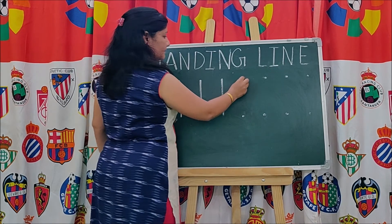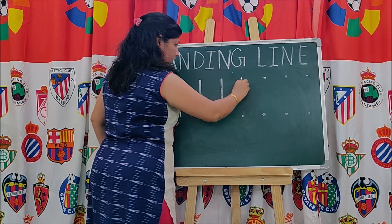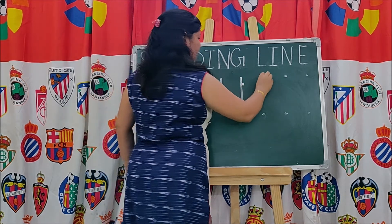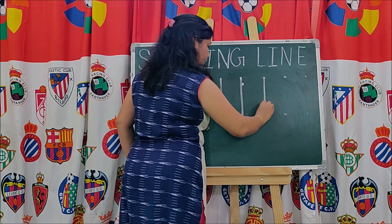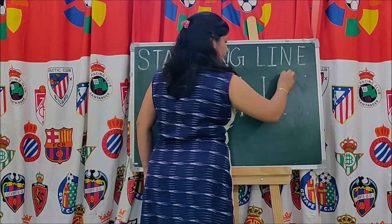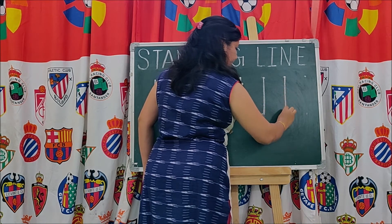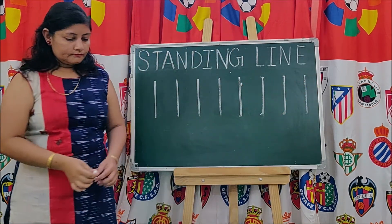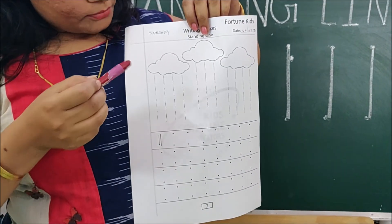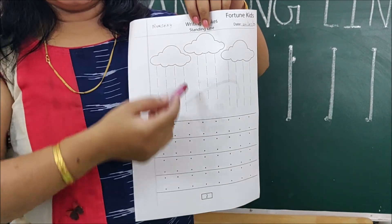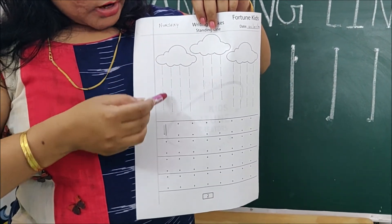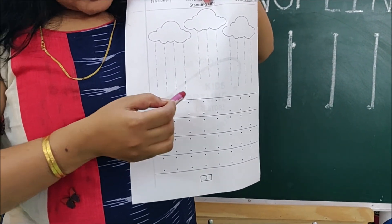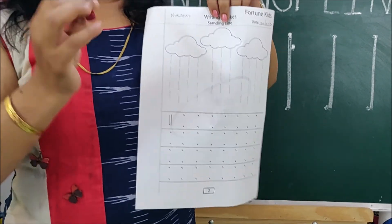Here are some dots. Place the crayon on the top dot and come straight down to the bottom dot — top to bottom standing line. From now you will get worksheets like this. In the worksheet you have to trace over the dotted lines and join the dots, top to bottom, with the help of crayons.